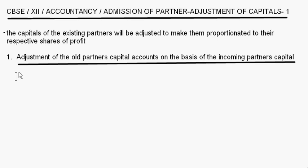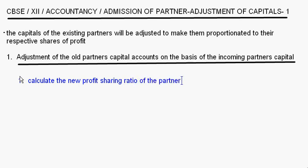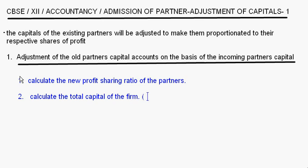There are certain steps which you have to understand first, and then we will take up a question. The first thing you have to do is calculate the new profit sharing ratio of the partners. If it is not given in the question, you calculate it based on the share of the new partner. Then, calculate the total capital of the firm, which is the new partner's capital divided by their share of profit.